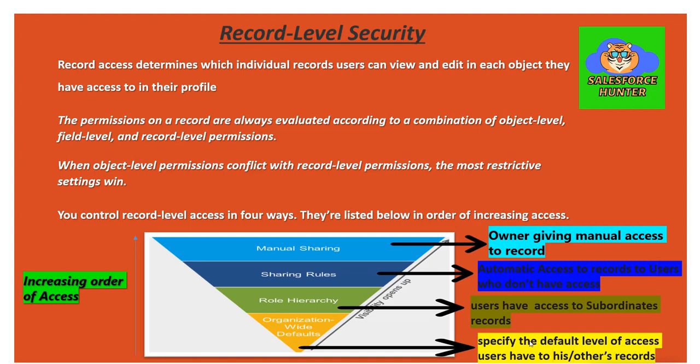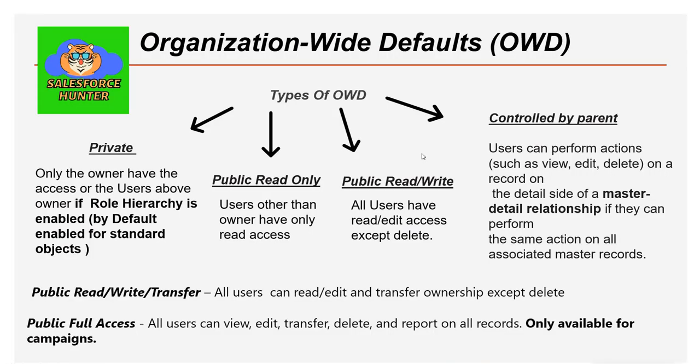Sharing rules provide automatic access to records for users who don't have access. We set some conditions, and whenever those conditions are fulfilled, the other user will have access to records they don't own. Manual sharing is basically the owner giving access to other users. Now in this video we're going to restrict ourselves to OWD and understand it in detail.